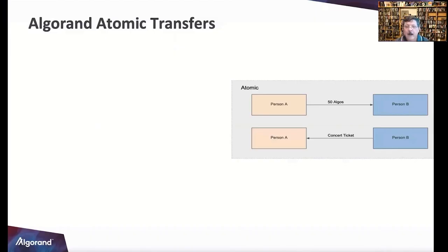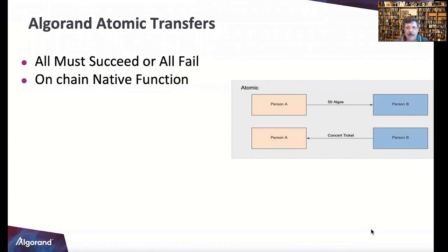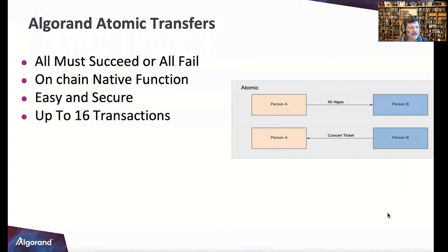Let's get into atomic transfers. They all must succeed or all fail — very analogous to a SQL database transaction: if any fails, it rolls back. Think about it: person A sends 50 Algos to person B, and person B returns a concert ticket. This has always been the problem with buying tickets on Craigslist — you don't trust the person and many people have gotten burned because of that.